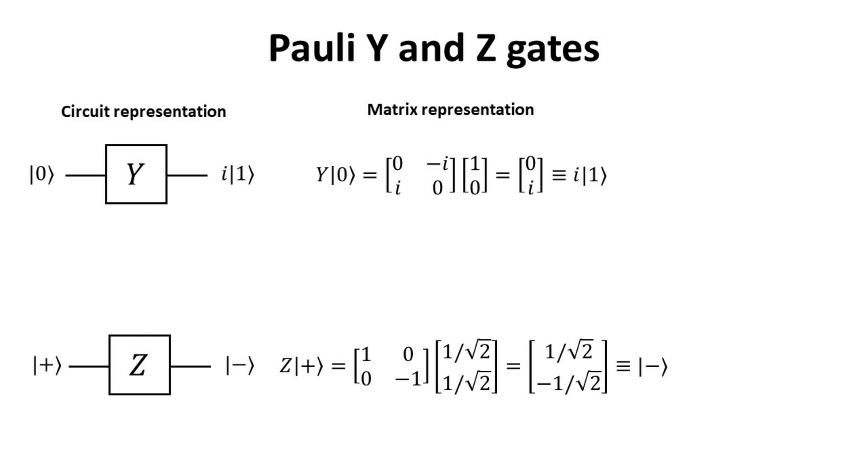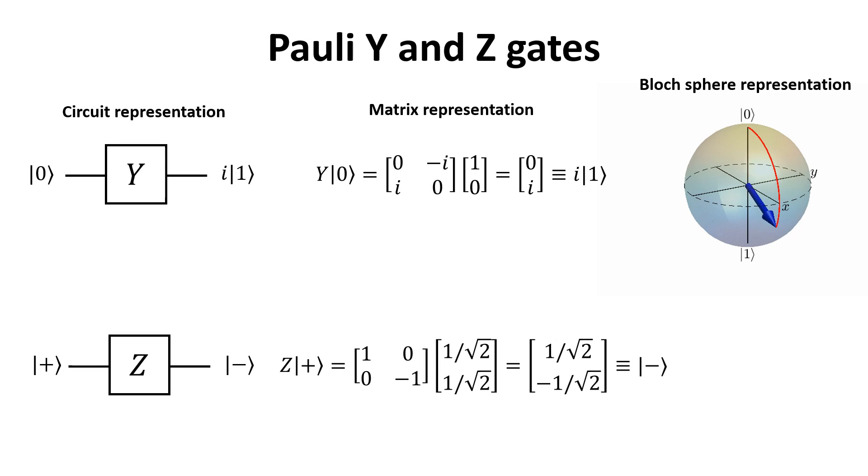In similar fashion, one can also define the Y and Z Pauli gates as rotation of pi with respect to the Y and Z axis respectively. Per the general definition of the spin one-half rotation matrices, one can also check that these rotations correspond to the Pauli matrices sigma Y and Z. Their operations are illustrated on the Bloch sphere. The Y gate rotates the zero ket by pi with respect to the Y axis, ending up as the one ket. Note that a global phase is incurred during the operation, which can be dropped.